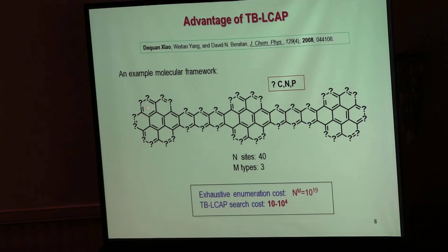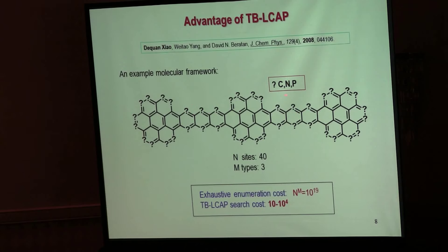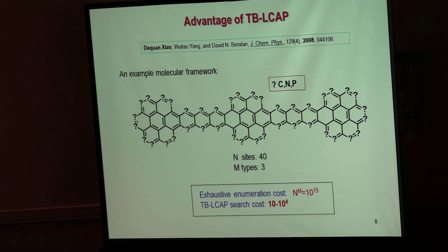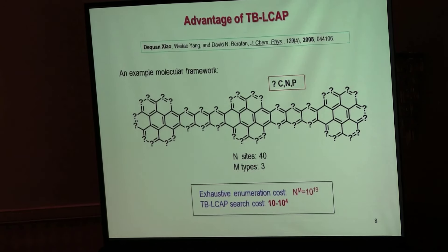Here is an example of why TB-LCAP is more efficient compared to the discrete version of molecular search. Consider an all-pi-conjugated molecular framework where each site has three options: carbon, nitrogen, or phosphorus. If you have 40 variable sites, the total number of possible molecules is 10 to the 19th. To enumerate all possibilities with a single computer would take about a year even at the tight-binding level. However, a TB-LCAP search is equivalent to about 10 to the 14th molecular structure calculations, which is much more doable.